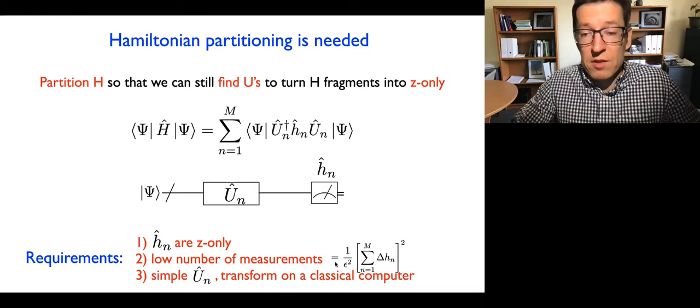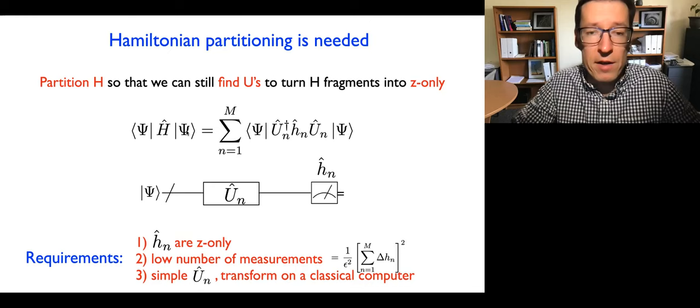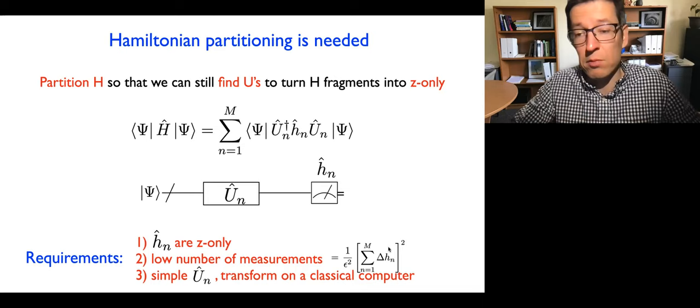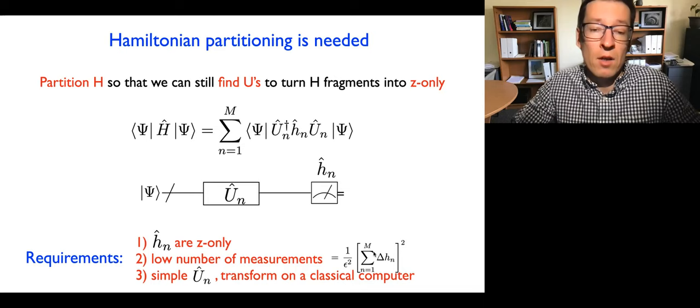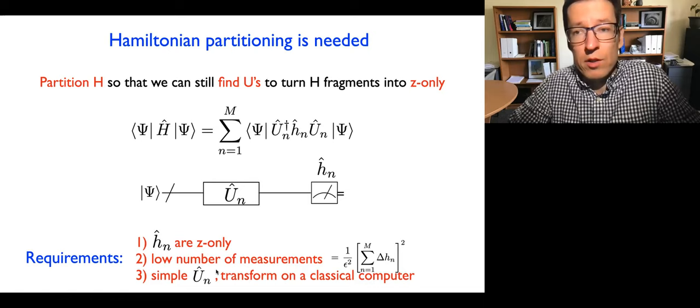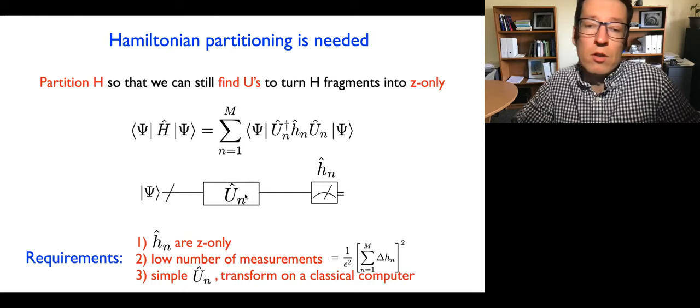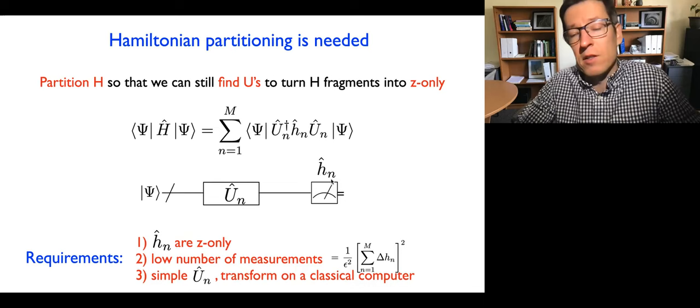That creates the need for multiple measurements to gather statistics. The exact expression for the number of measurements needed to achieve epsilon accuracy in the expectation value depends quite expectably on the variance of the fragment operators. The third condition is that the unitary transformations must be simple both on the quantum computer as a circuit, and also on a classical computer — because we need to know in advance what the small h and operators are before entering the measurement process.